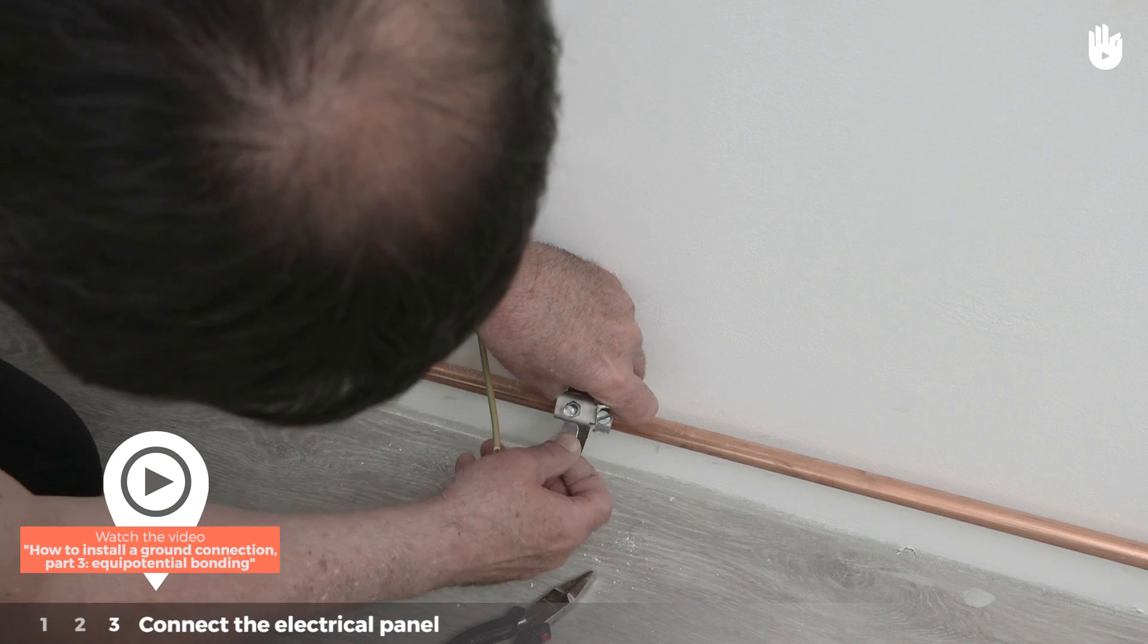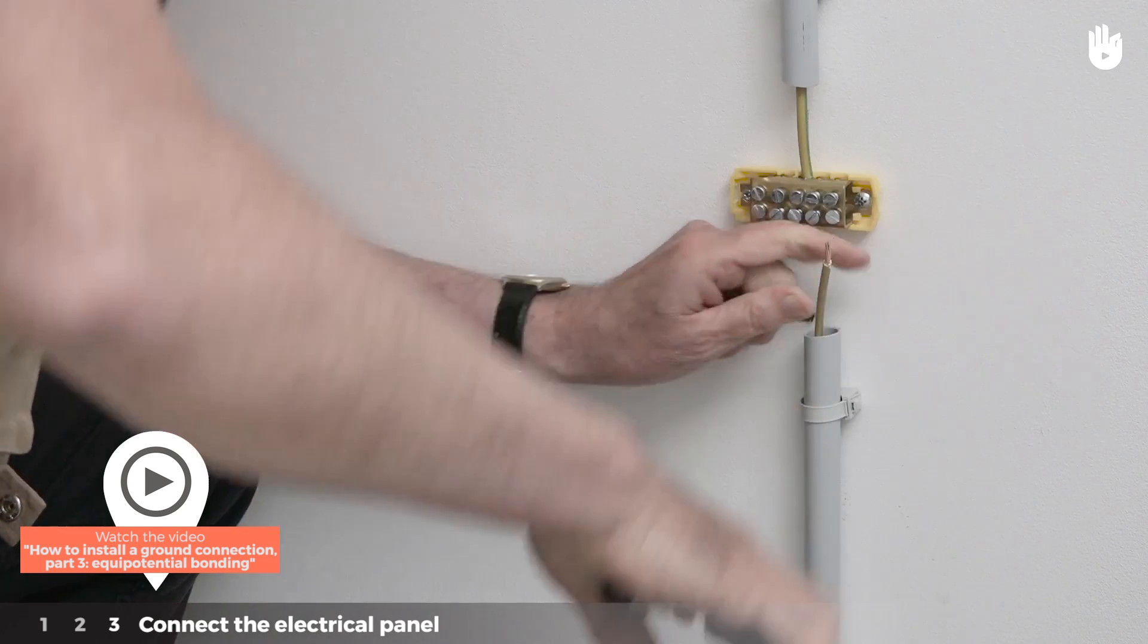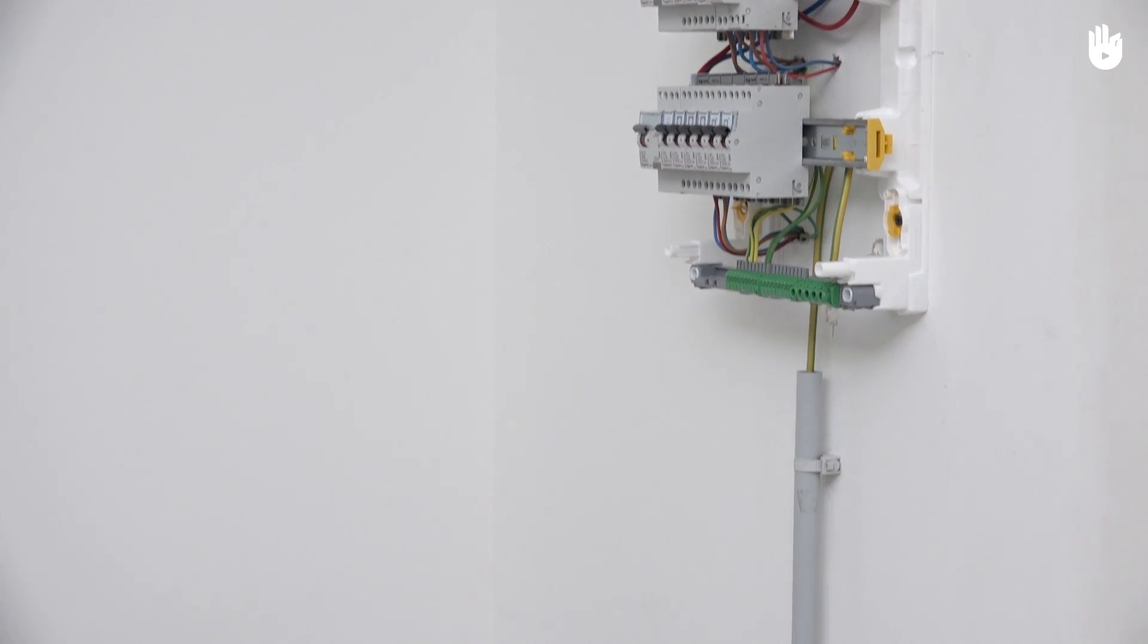For the rest of this installation, please watch the video How to Install a Ground Connection Part 3 Equipotential Bonding. You now know how to connect the ground connection to the electrical panel.